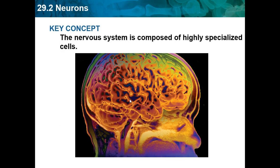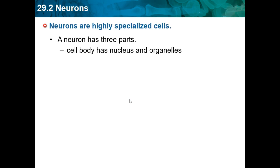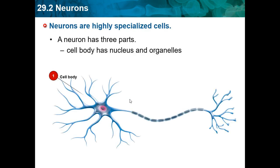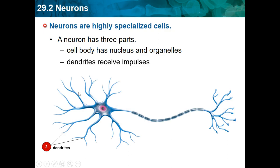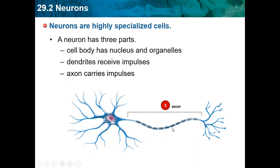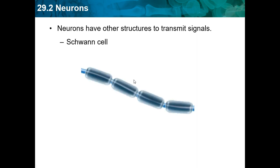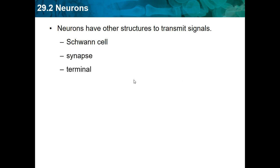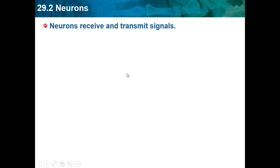Section 29.2 covers neurons. The nervous system is composed of highly specialized cells called neurons. A neuron has three parts: the cell body, which has the nucleus and organelles; dendrites, which receive impulses; and the axon, which carries the impulse. The axon is surrounded by axon sheaths, which basically help signals travel faster. Neurons also have axon terminals at the ends, which send the signal out.